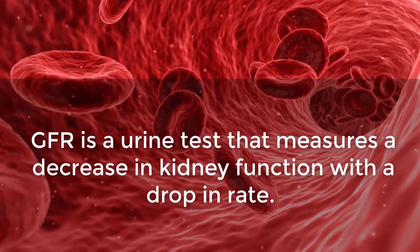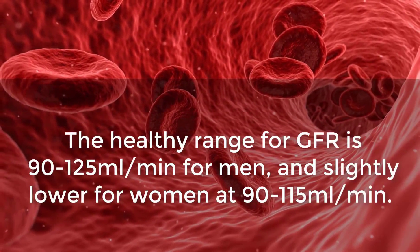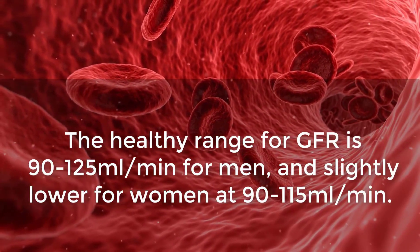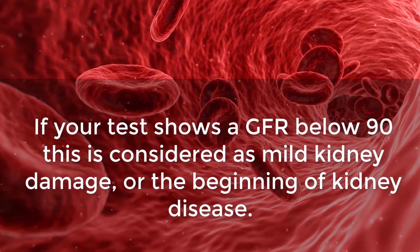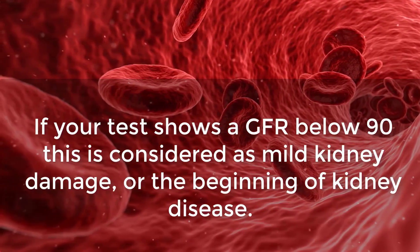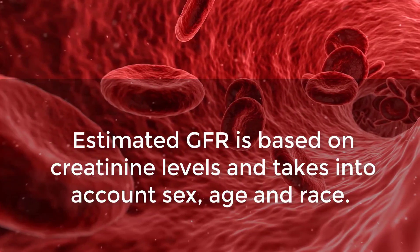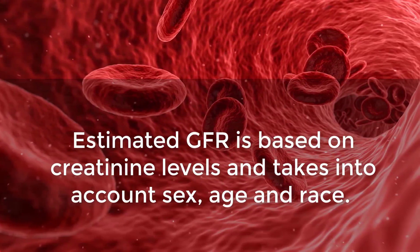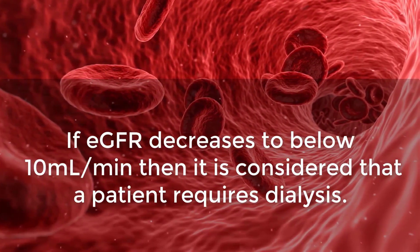GFR is a urine test that measures a decrease in kidney function with a drop in rate. The healthy range for GFR is 90 to 125 milliliters per minute for men and slightly lower for women at 90 to 115. If your test shows a GFR below 90, this is considered mild kidney damage or the beginning of kidney disease. Estimated GFR is based on creatinine levels and takes into account sex, age, and race. If GFR decreases to below 10 milliliters per minute, a patient is considered to require dialysis.